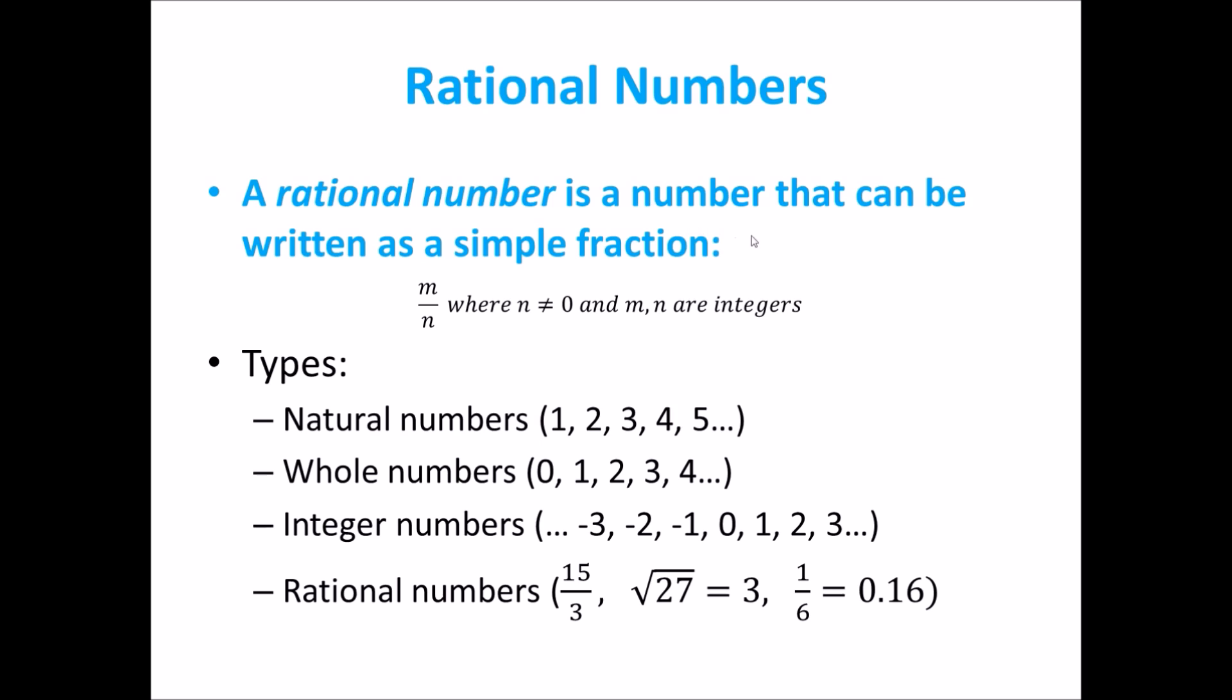We can say that a rational number is a number that can be written as a simple fraction, being m over n, where n or the denominator does not equal 0, and m and n are integers.